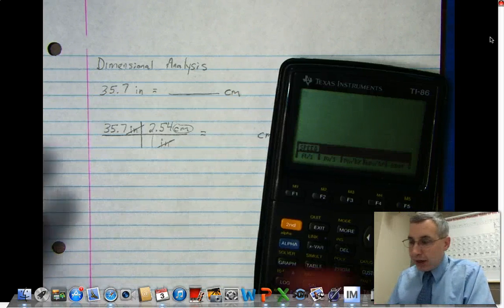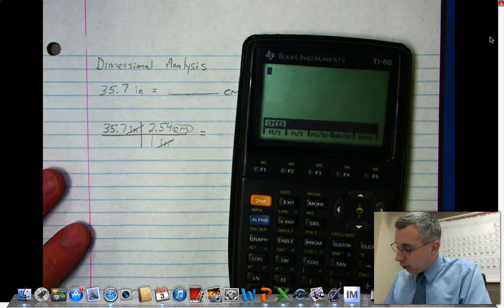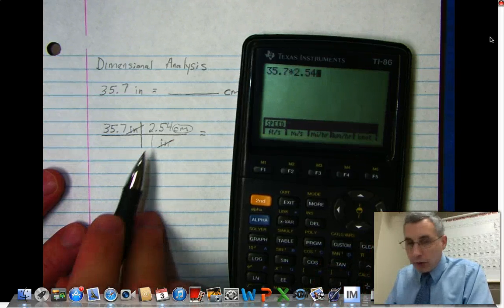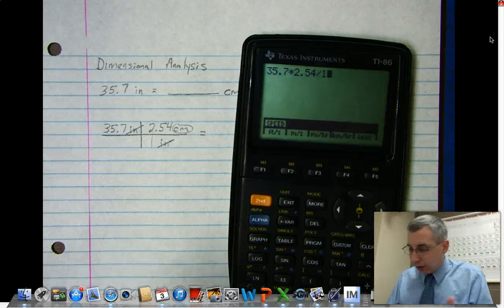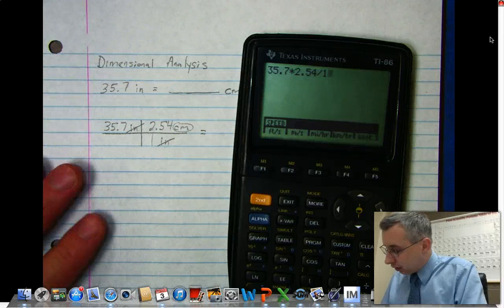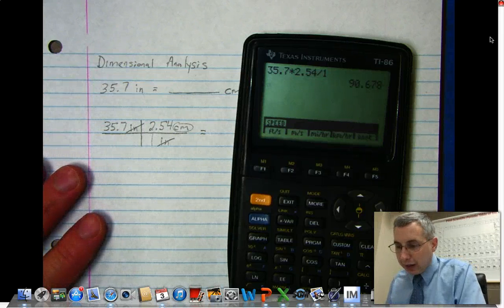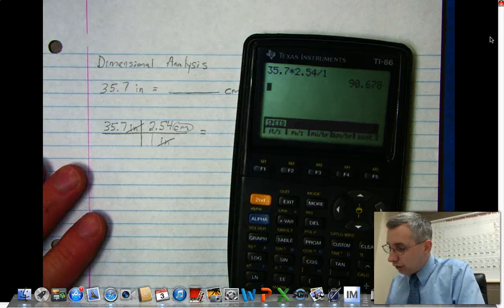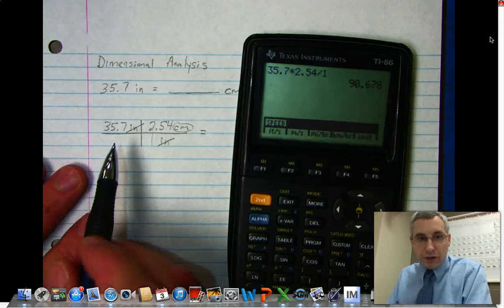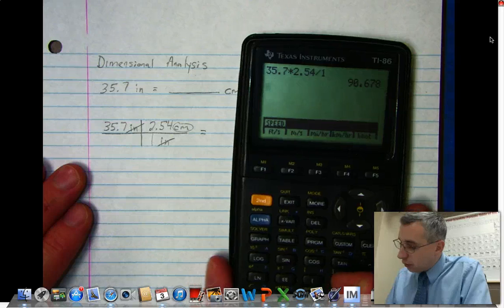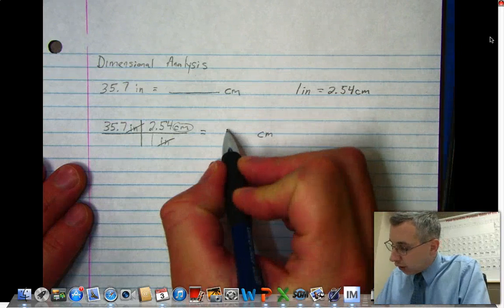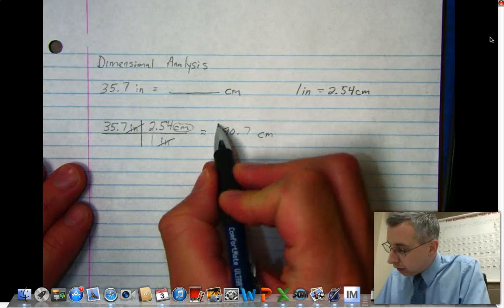The way to calculate with dimensional analysis is to multiply all the numbers across the top and divide by any numbers on the bottom. So here we have 35.7 times 2.54 divided by one, and I get 90.678. To follow significant figure rules, the original number has three sig figs, so my answer is going to have three. I will round it to 90.7 centimeters.